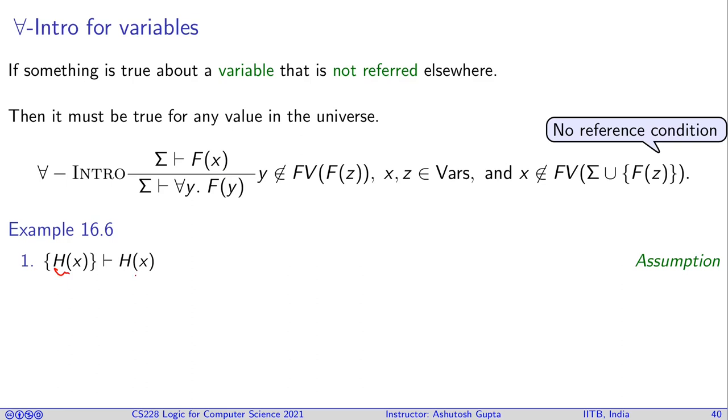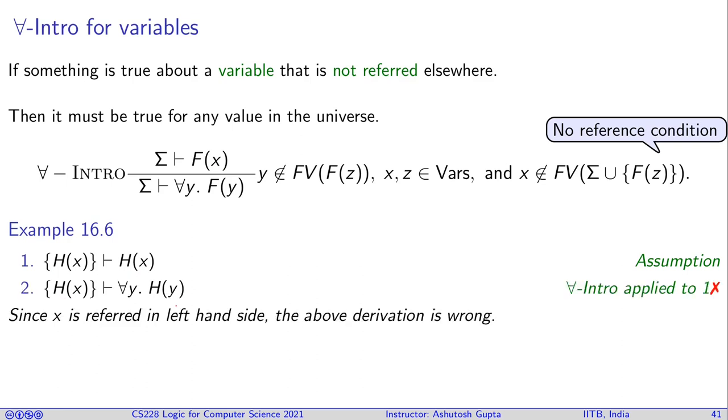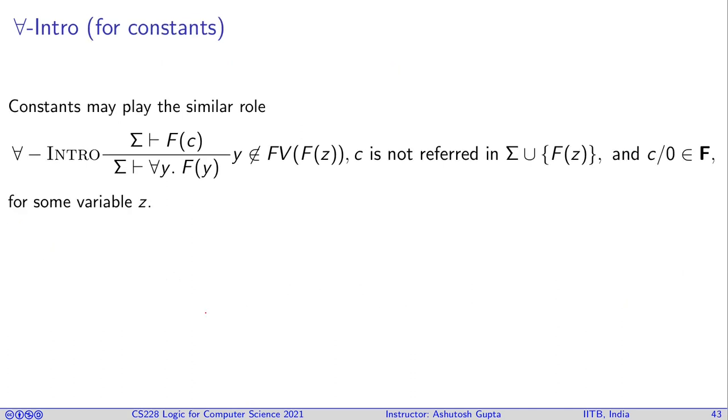So, how are we going to use it? If let's suppose I have H(x) and you can derive H(x) from it using assumption, we cannot just simply do for all here. This will be wrong. Why it is not allowed? Because there is x being referred on this side. So, therefore, this move is not allowed. There are more ways you can apply for all rule. There's one additional situation when you have some fact on some constant c. And it is a function without any parameter. And you know that that constant doesn't appear in sigma or F(z). Then this constant can be taken out and replaced by a y and you can say for all y. And the usual restriction, y does not appear appropriately in F(z) is applied still. And all the substitutions happening are valid defined substitutions.